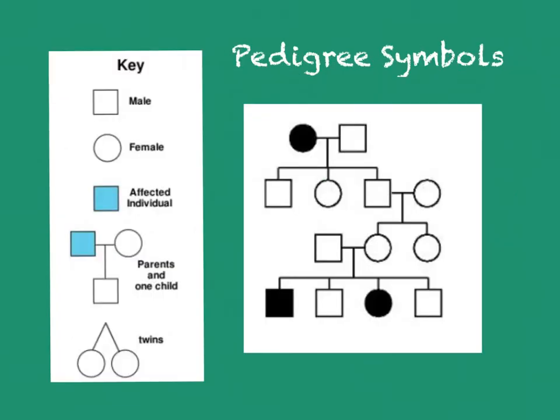The first thing you have to know about pedigrees is how to read all the symbols. The boxes stand for male, and the circles stand for female.